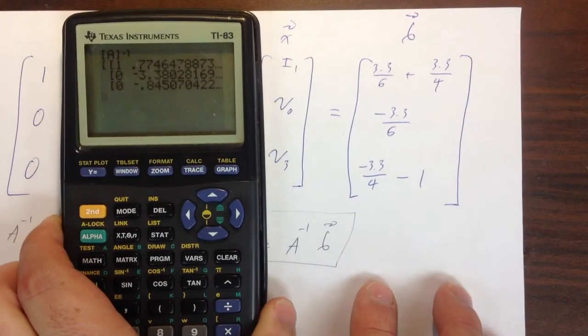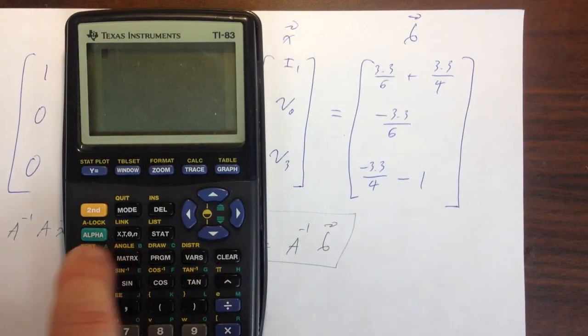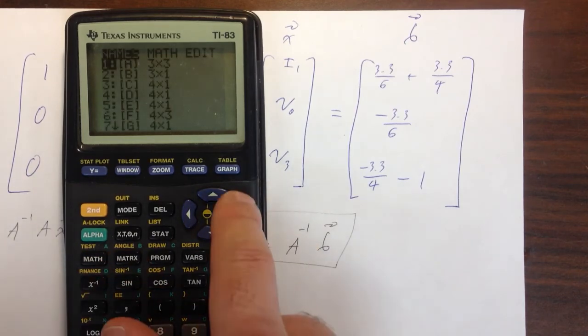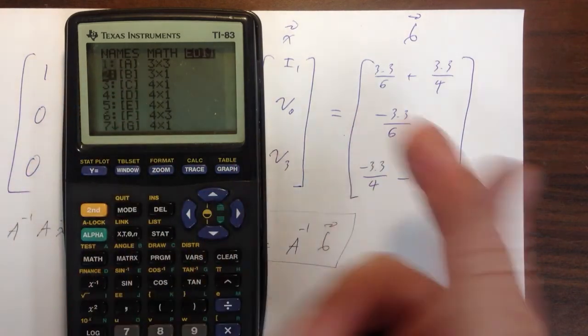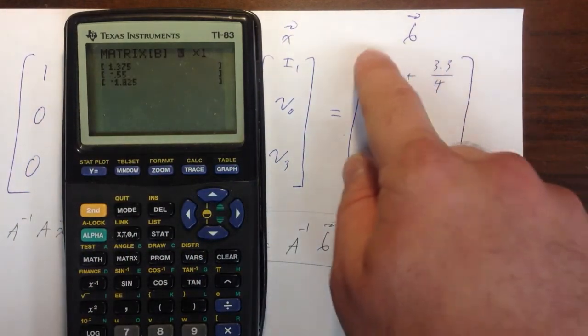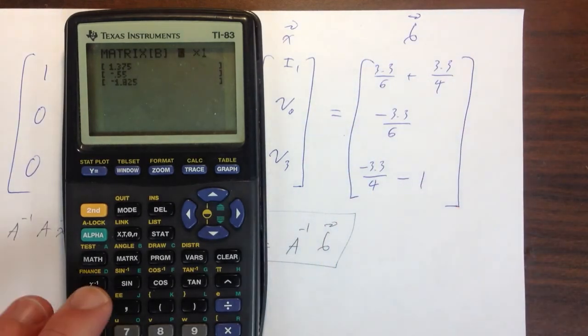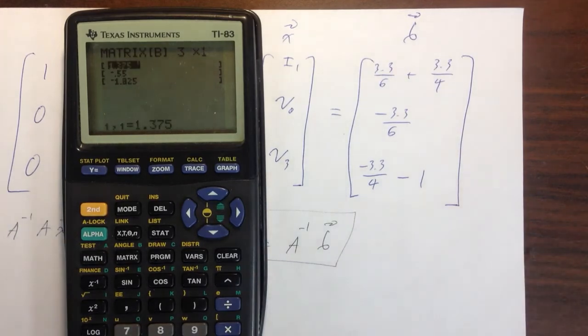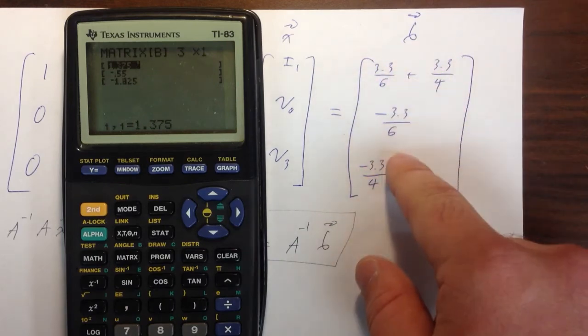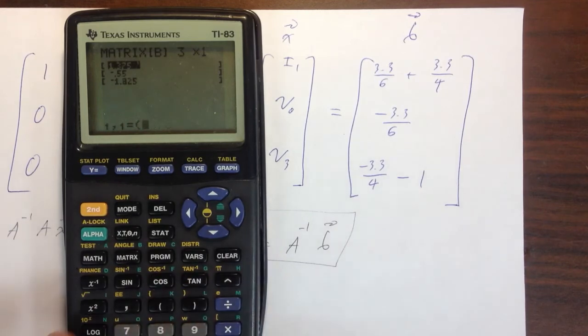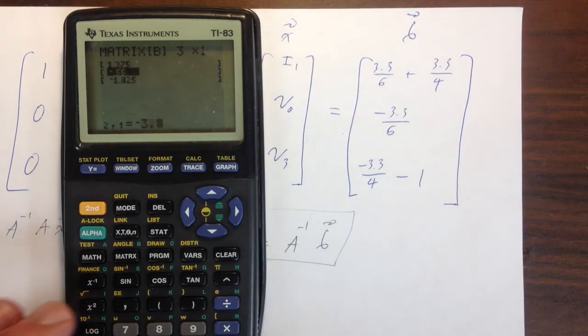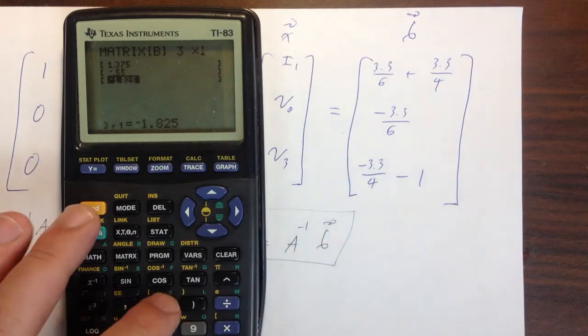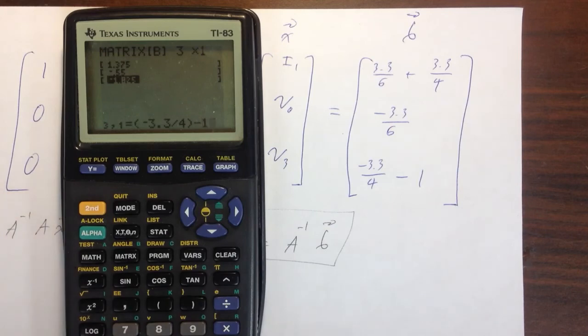Now what we have to do is we actually have to put in our matrix B. This is my matrix B right here. I'm going to go ahead back to my matrix menu, go to matrix. I'm going to go over two clicks to the right to my edit menu. Now instead of editing matrix A, I'm going to edit matrix B. Matrix B is a three row, one column matrix. So I'm going to have three, enter, one, enter. That gives me a three by one. Now I'm just going to put in these numbers. Again, I'm not simplifying this. I'm letting the calculator simplify. This is 3.3 over 6 plus 3.3 over 4, first entry. This is minus 3.3 over 6. And then the last one is minus 3.3 over 4 minus 1. It's all in matrix B.